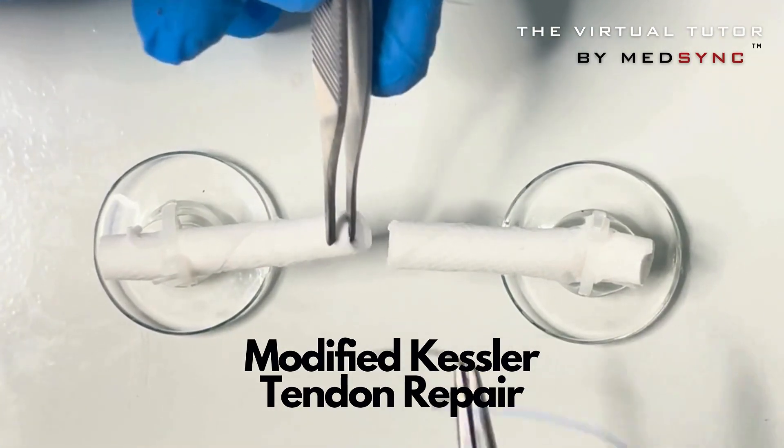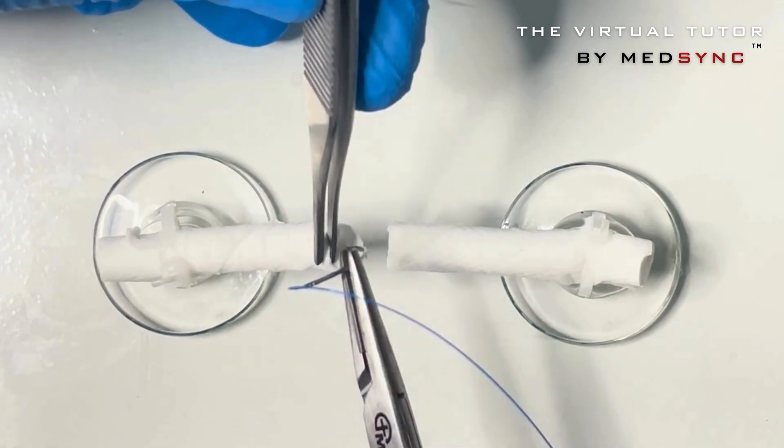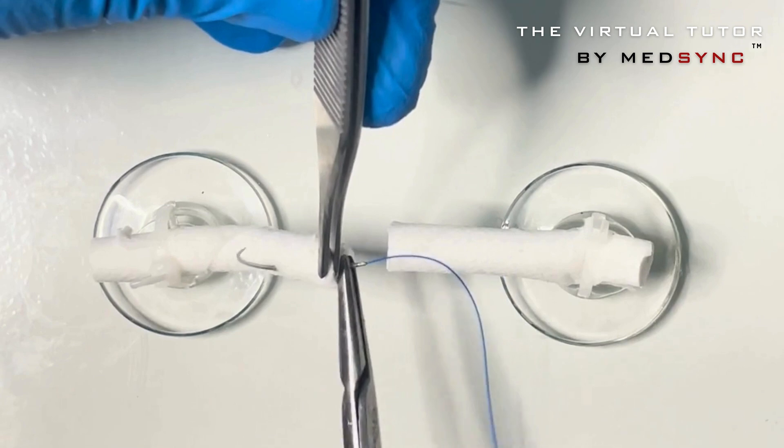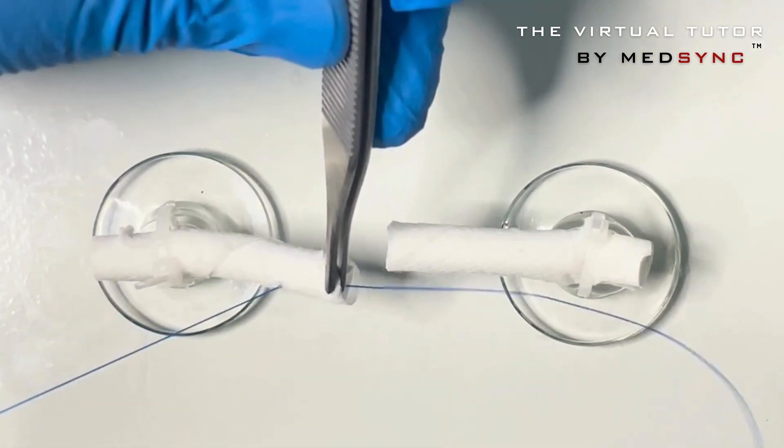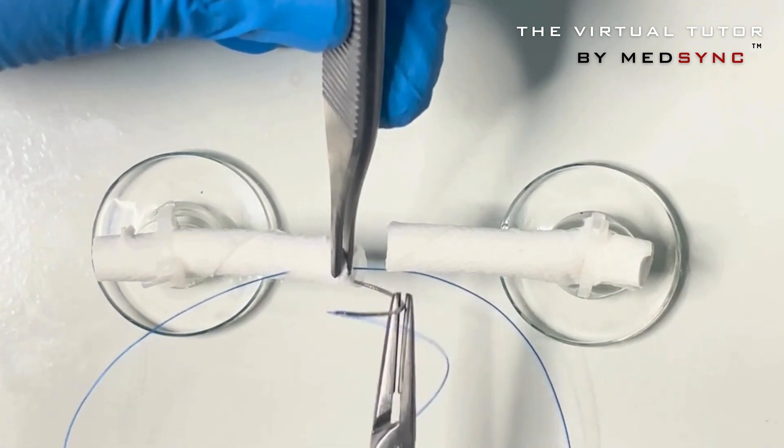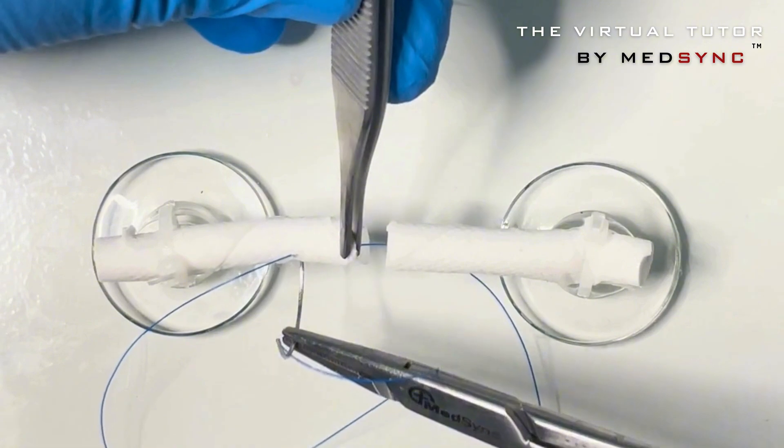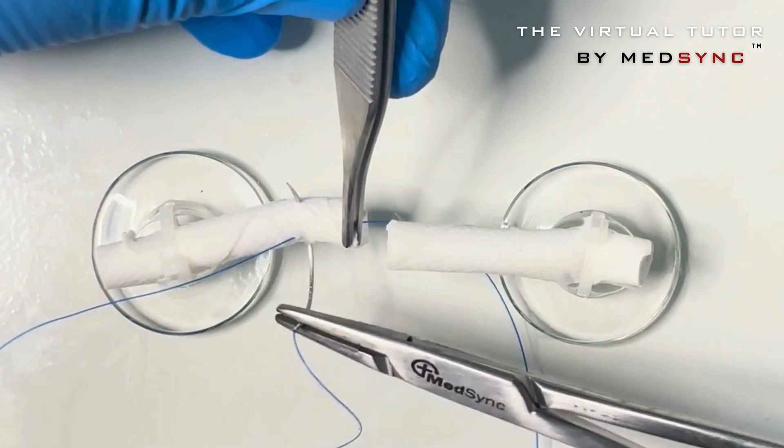The modified Kessler can be left as a two-stranded repair or continued and made a four-stranded repair. You start, as always, with a one centimeter straight bite. Turn the needle around. This is followed by a transverse bite all the way across the tendon.